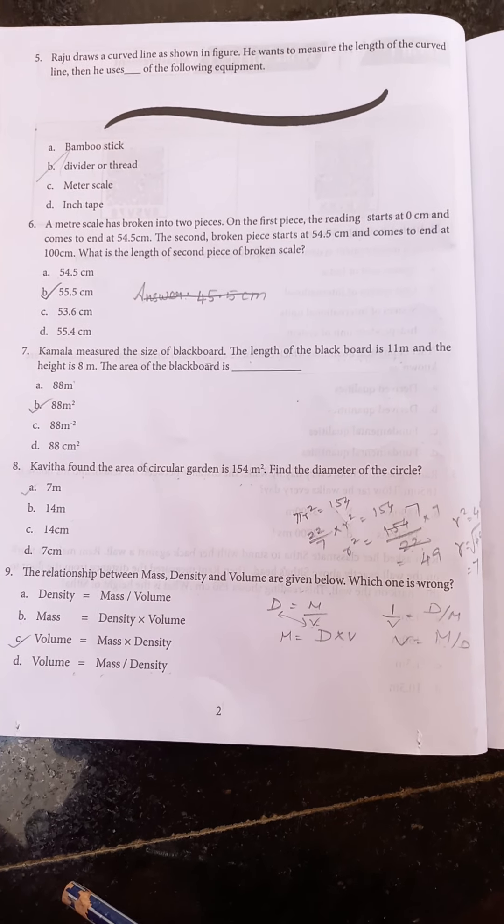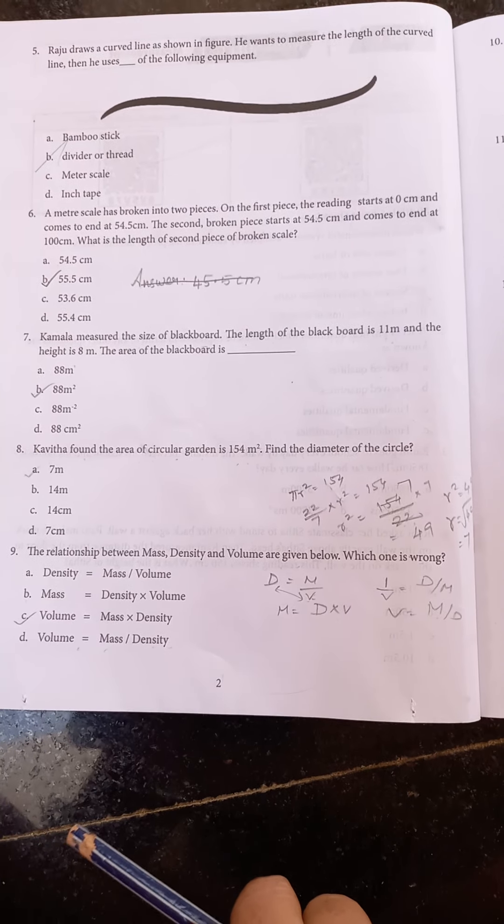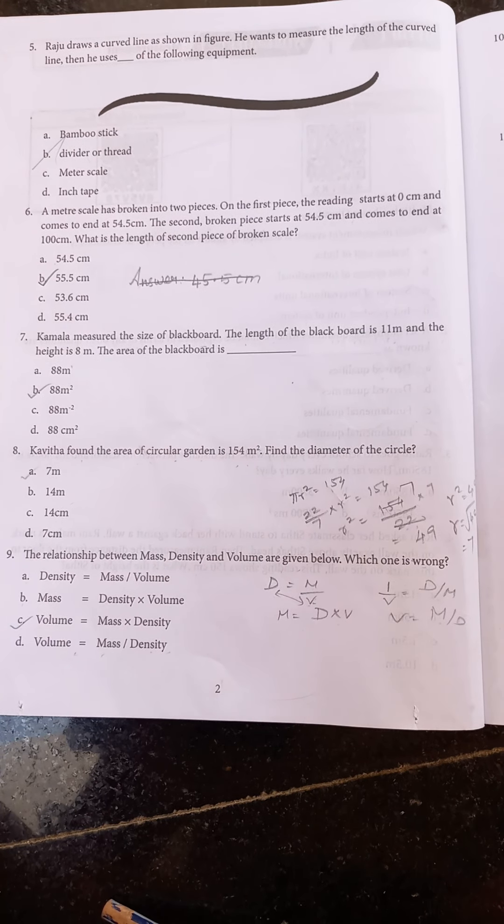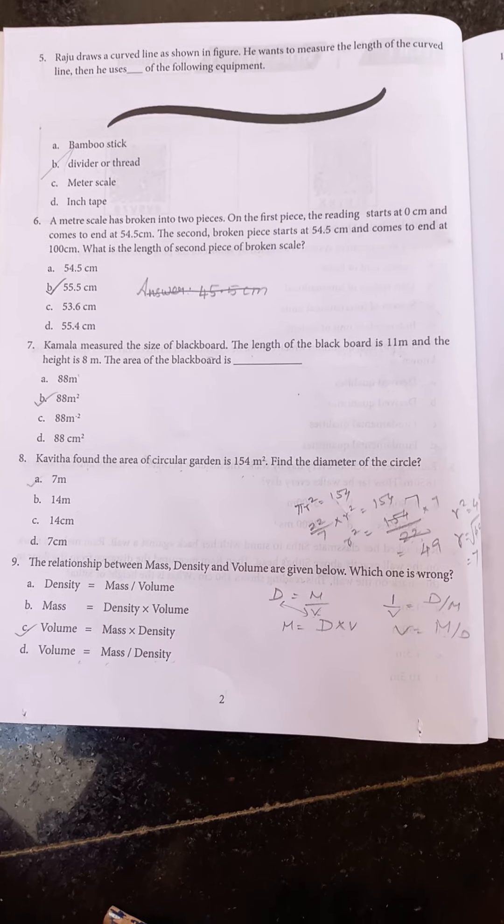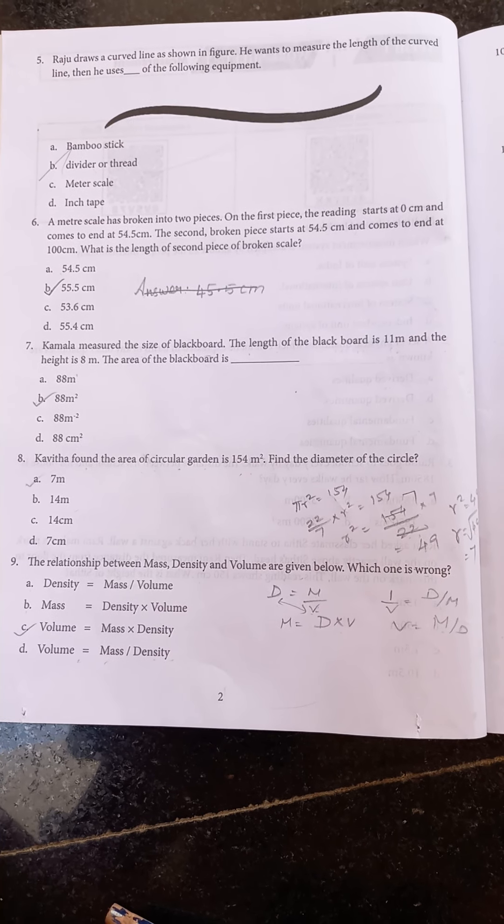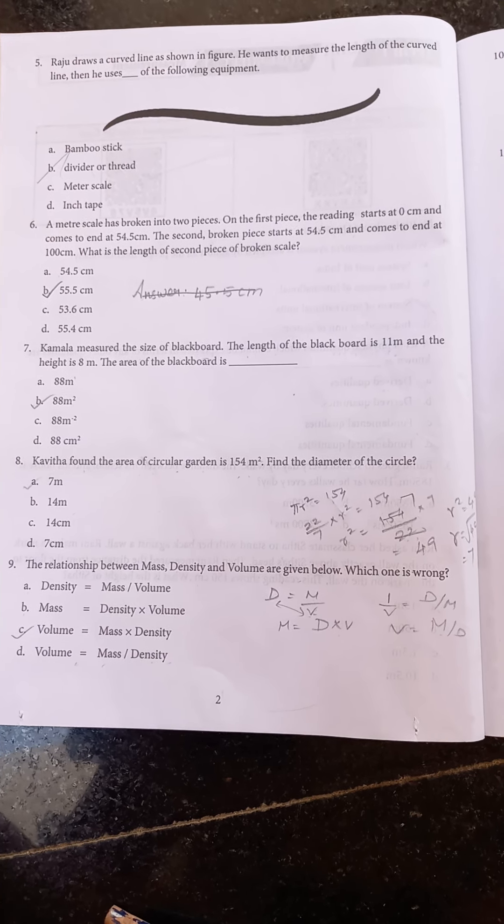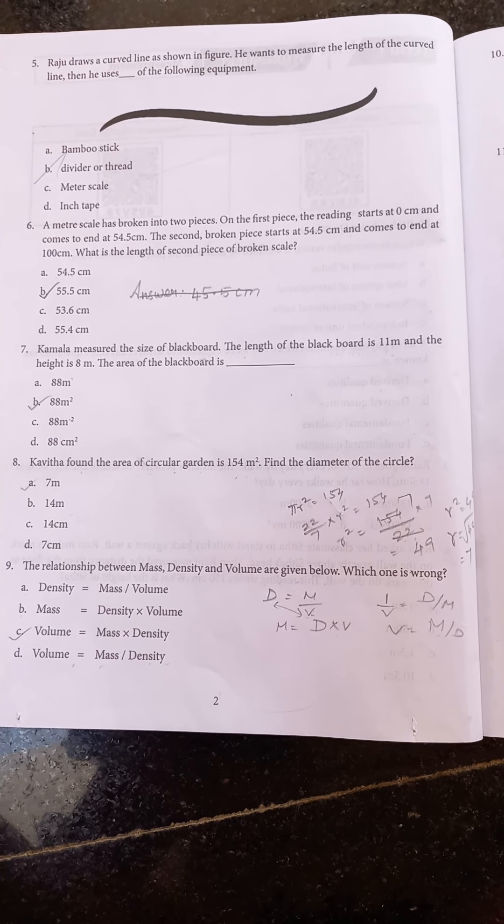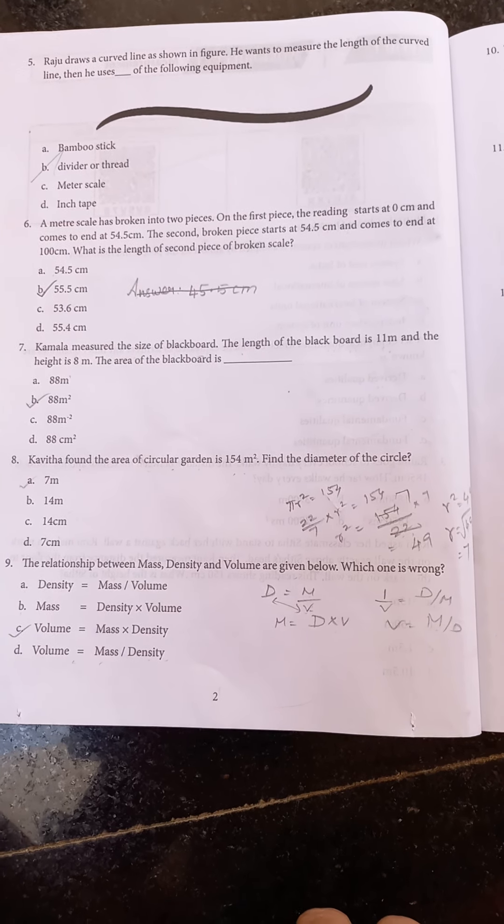The relationship between mass, density, and volume are given below. Which one is wrong? The wrong answer is volume equal to mass into density. The correct answer is volume equal to mass by density, so option C is wrong.